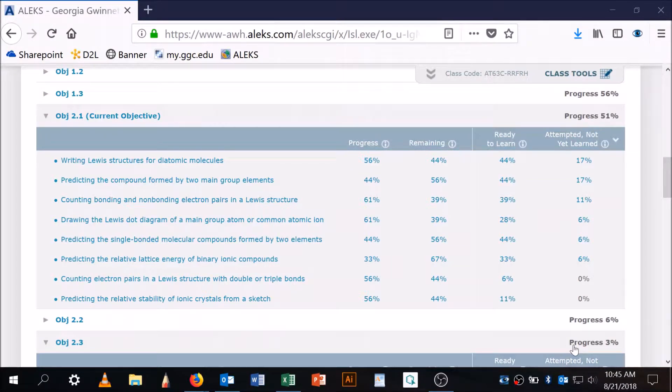Okay, so looking at attempted yet not yet learned from objective 2.1, it looks like about a sixth of the students who attempted it have not completed it.